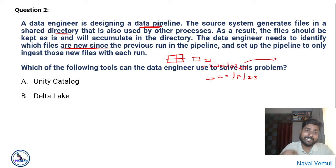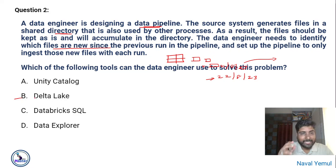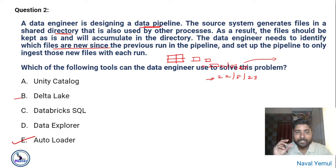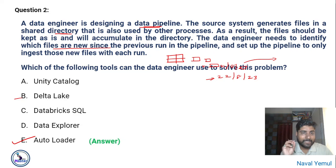Which tool should the data engineer use? Unity Catalog is a governance solution; Delta Lake is a storage format; Databricks SQL is a data warehouse solution; Data Explorer is just a tab. The only correct answer is Autoloader. Autoloader has an exactly-once guarantee — once data is read, it will not read it again. Only new files coming into your data lake are processed. So the answer is Autoloader.